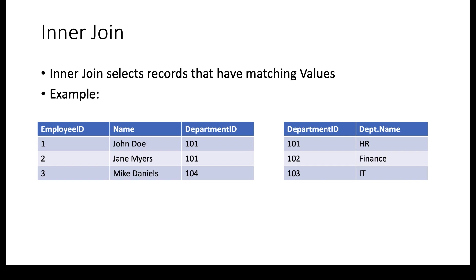Here's an example of inner join. We have two tables — the employee table and the department table. The employee table has three records: John Doe, Jane Myers, and Mike Daniels. John Doe and Jane Myers both work in department 101, which is the HR department. The second table is the department table which has the department IDs: 101 corresponds to HR, 102 to Finance, and 103 to IT.